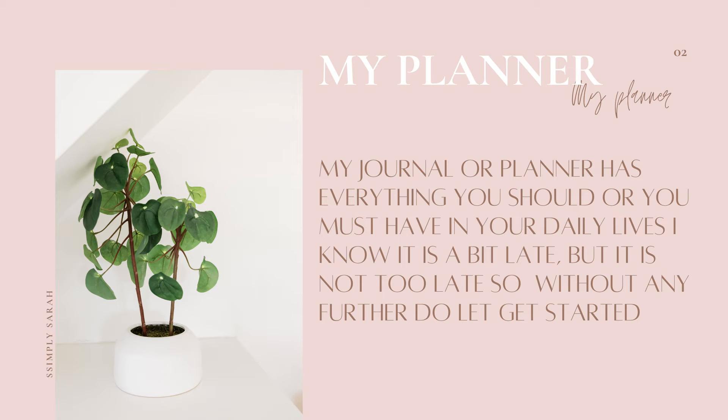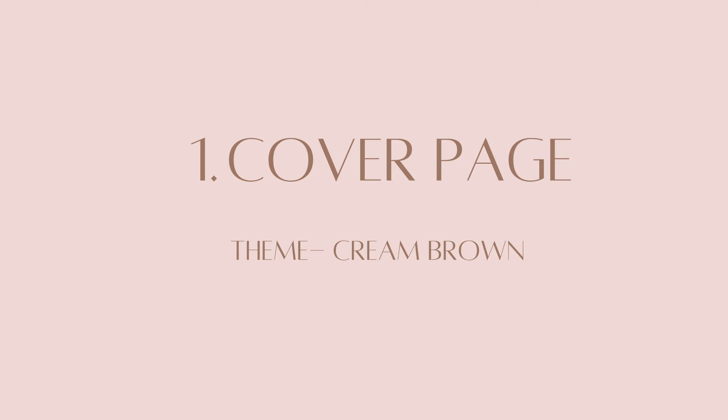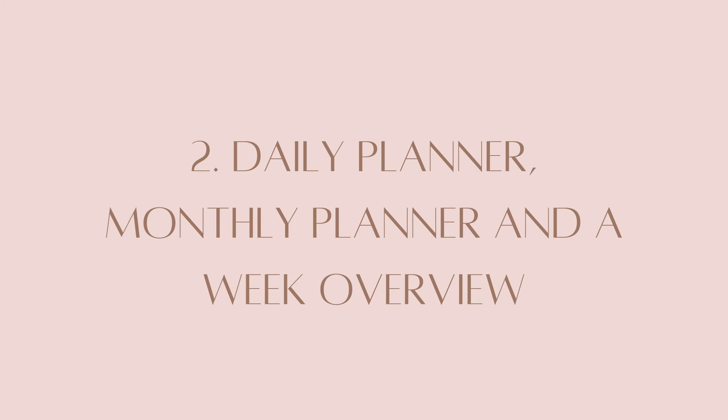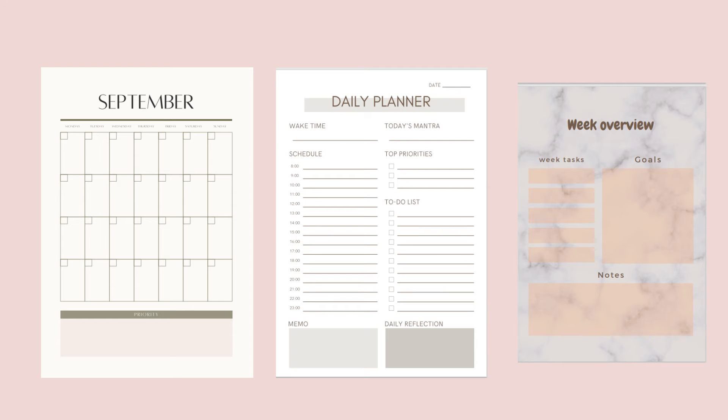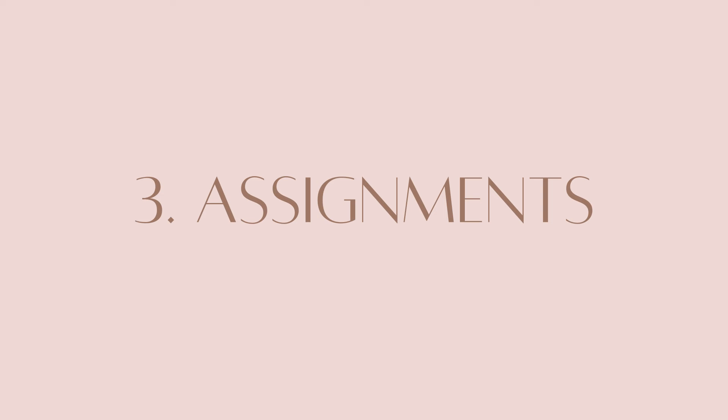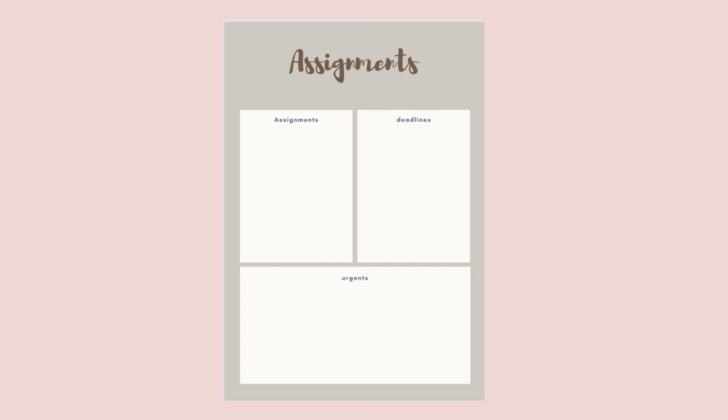The first thing in my planner is the cover page — it's cream and brown. This is how the cover page looks. Next is the daily planner, monthly planner, and weekly overview, which helps you plan your September month. After that is the assignment section, where you can mark your assignments and deadlines.